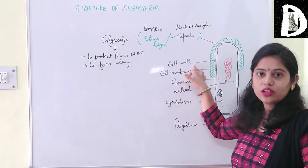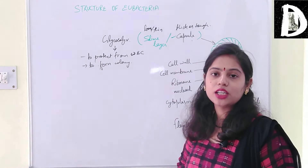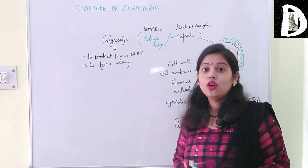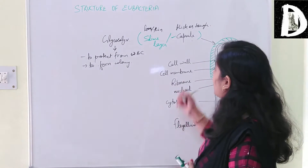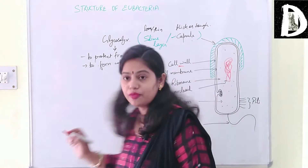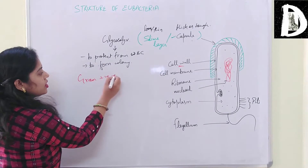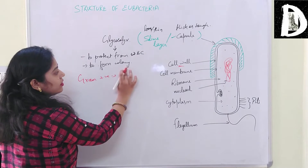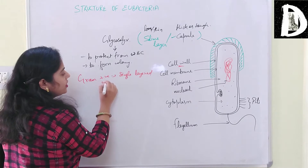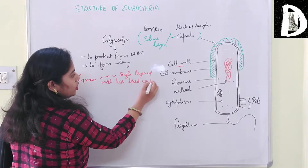The next layer is the cell wall, which is called peptidoglycan. As discussed in the last video, there are two types of bacteria according to gram stain: gram positive and gram negative. Gram positive bacteria has a single layer cell wall with less lipid content.